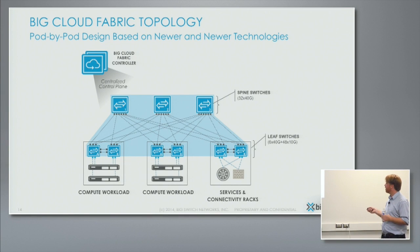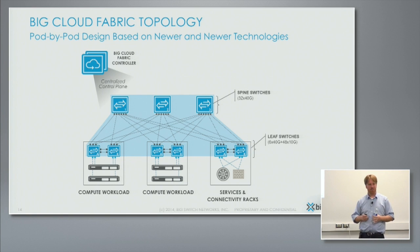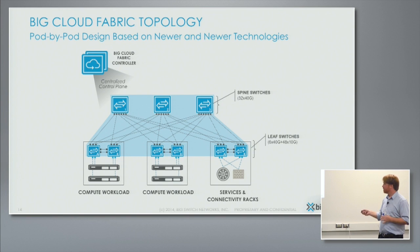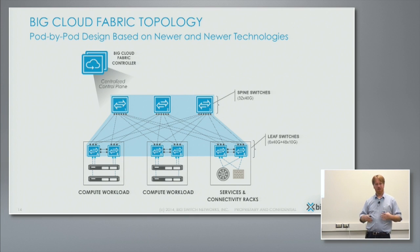The leaf switches are 48 by 10 gigs, with 640 gigs going up. The spine switches are 32 by 40. This is all standard Broadcom bare-metal switch hardware. With this, you can connect to an upstream router and additional services, and what we provide is an extremely high level of east-west bandwidth traffic.